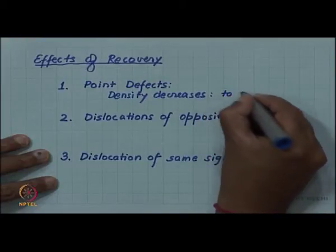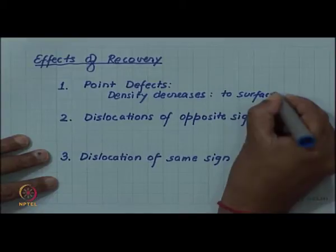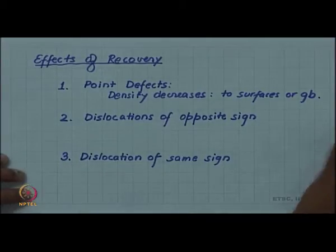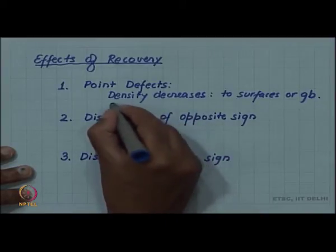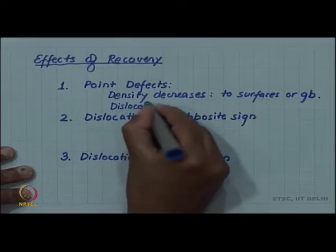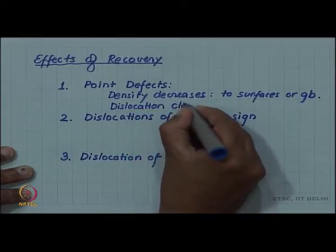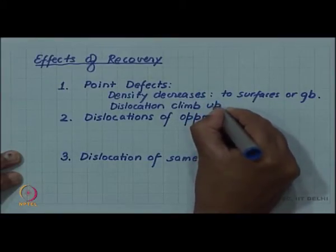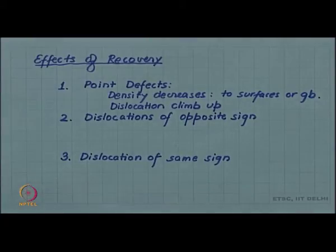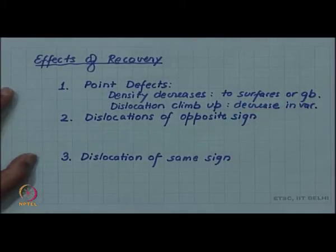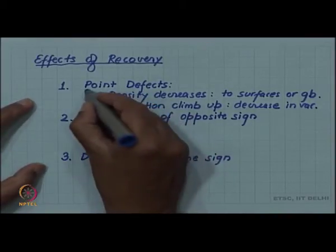Point defects are annihilated to surfaces or grain boundaries. There is also a mechanism by which point defects can annihilate through dislocation climb. If the dislocation climbs, the point defect density — specifically the vacancy density — will come down. This we have studied before. That is the effect on point defects.